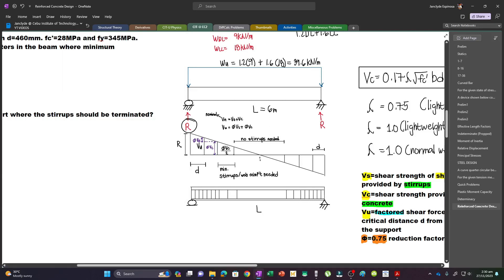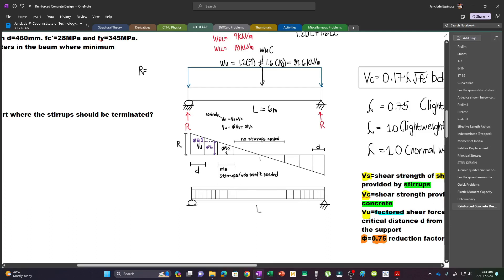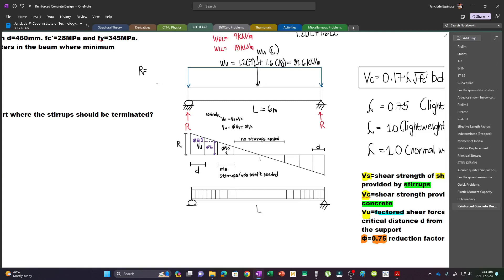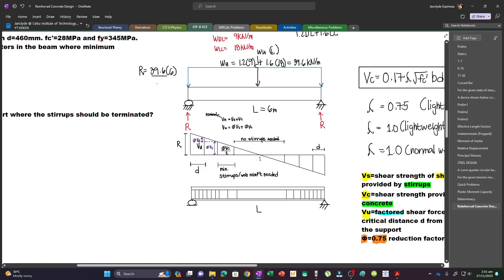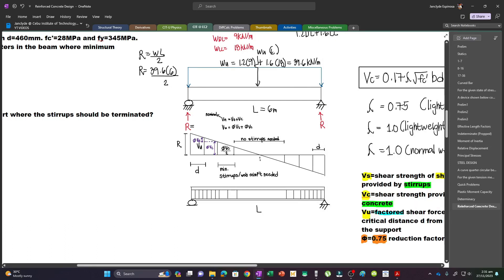Now to get R, since the beam is symmetrical, we can simply take half of the resultant of the distributed load. So R equals the resultant WU times L divided by 2. R equals WL over 2. This becomes 39.6 times the length divided by 2, which is 39.6 times 6 over 2 equals 118.8kN. And also this one here.